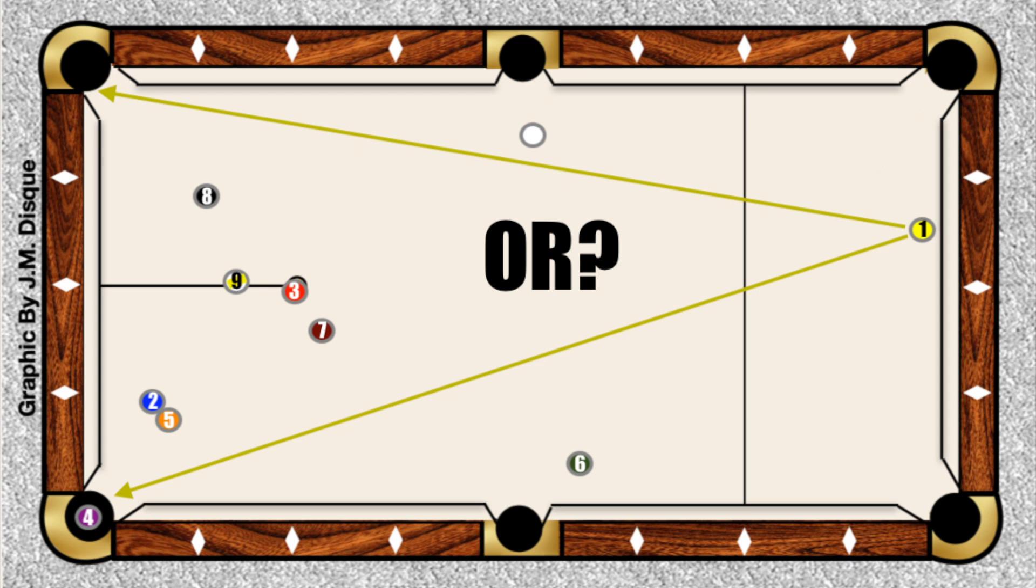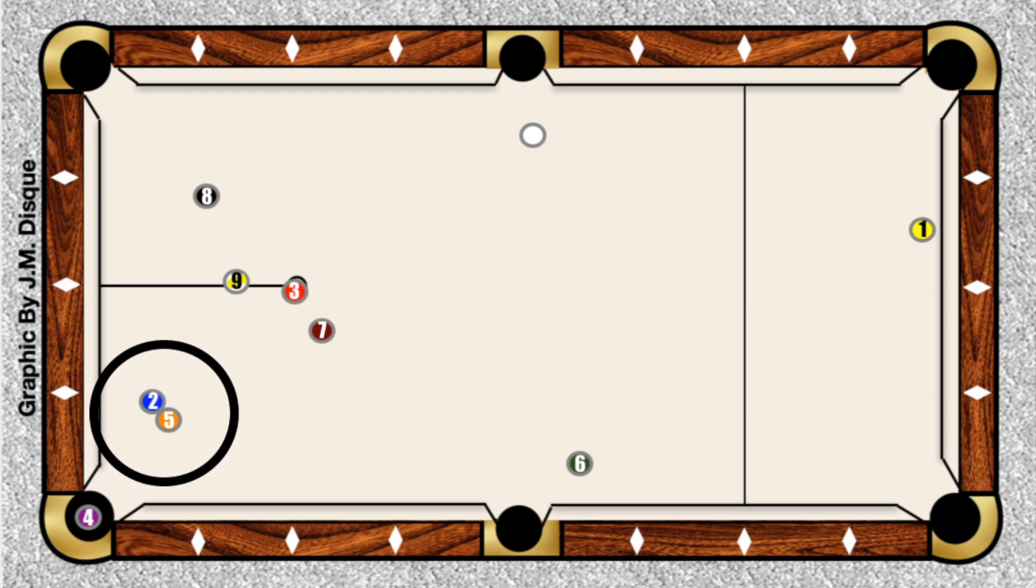But before we get to that, let's take a look at this 2-5, and we have a serious issue here. Common sense will tell you that there's no point in getting aggressive on the one ball and making the one ball if you're just going to get stuck on the 2-5, which are tied up. So if you're going to be playing safe on the 2-5, why not just skip ahead and play safe on the 1 and just avoid that whole dilemma?